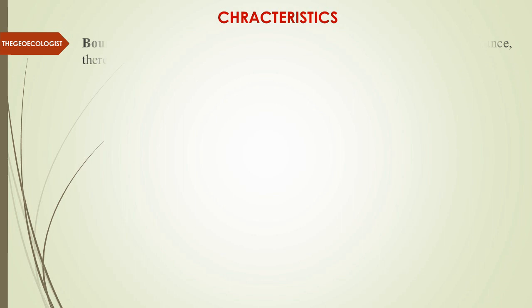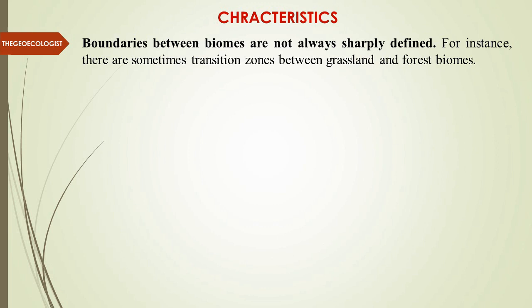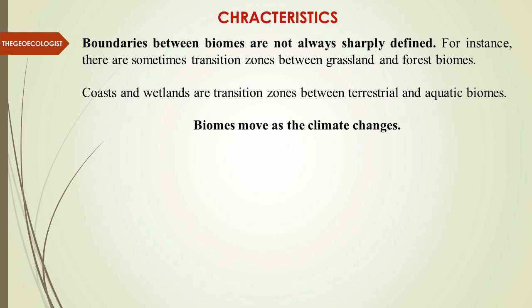A key characteristic is that boundaries between biomes are not always sharply defined — they are transitional. There are sometimes transitional zones between grassland and forest biomes. We have already learned about ecotones. Coasts and wetlands are transition zones between terrestrial and aquatic biomes. Biomes move as the climate changes — this is an important statement. What is the linkage of biome with climate change?